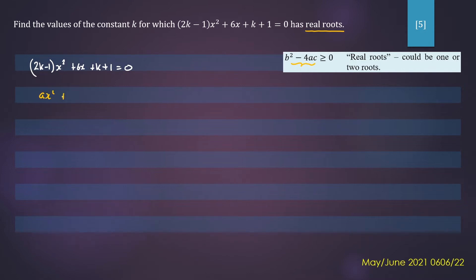So by doing that, we can see that a = 2k - 1, b = 6, and c = k + 1. And these are the values that we write into our inequality.